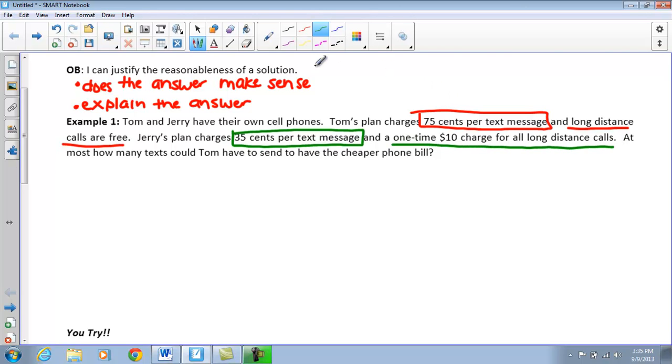Jerry's plan is $0.35 per text message and a one time charge of $10 for all long distance calls. Then it asks us, at most, how many texts could Tom spend to have the cheaper bill? If he's going to have the cheaper bill, he is going to spend less money.